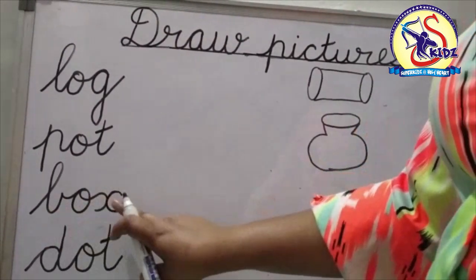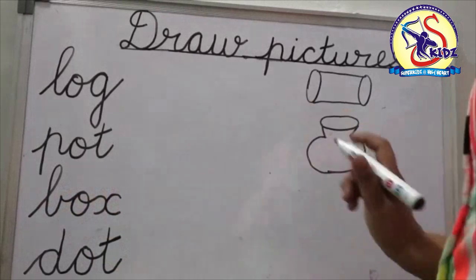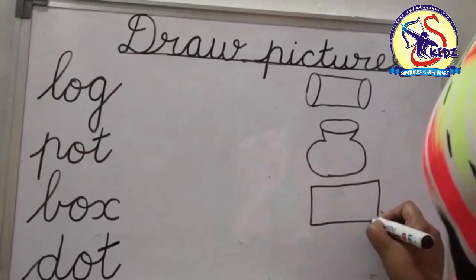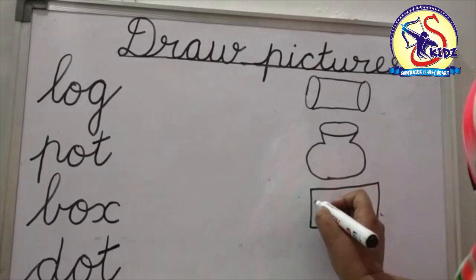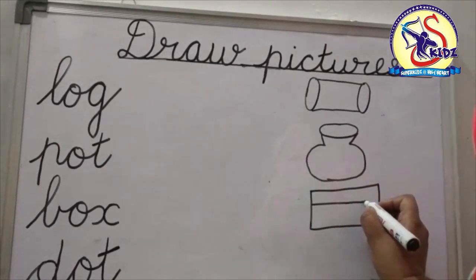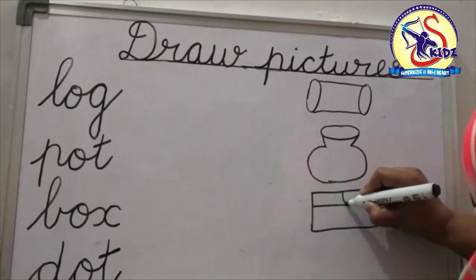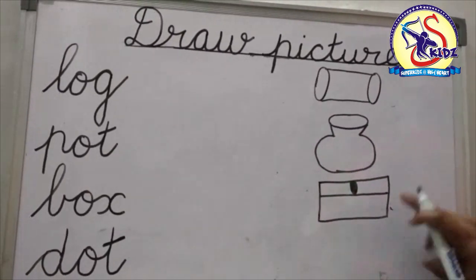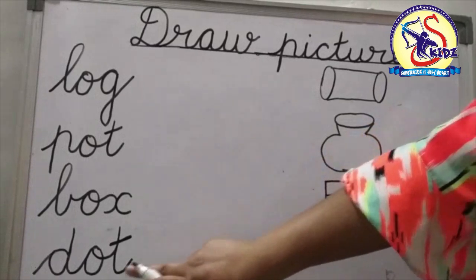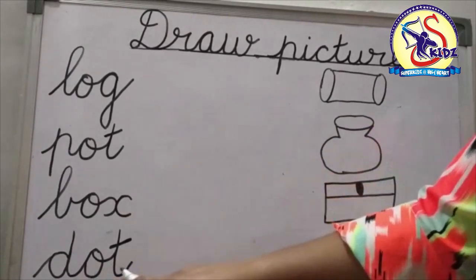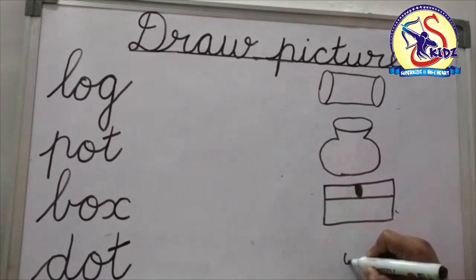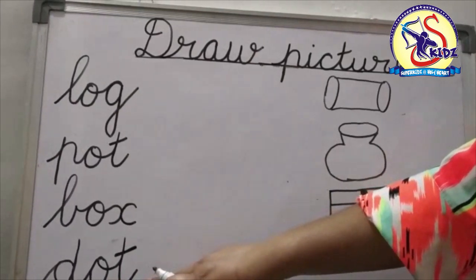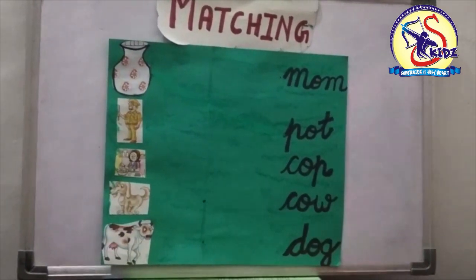Now see the next word: B-O-X, box. Now we will make a rectangle, then make a line here, then make a circle. This is a picture of box. B-O-X, box. Now see the next word: D-O-T, dot. Now we will make a dot here. D-O-T, dot.